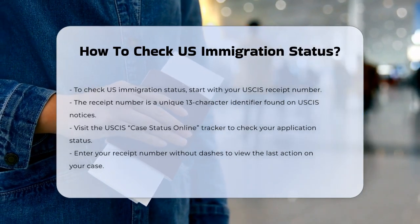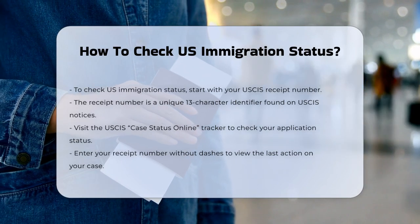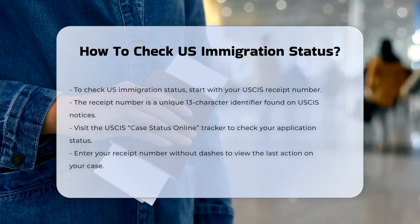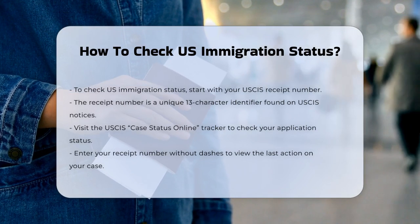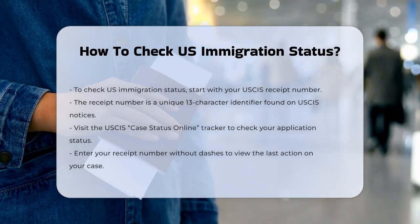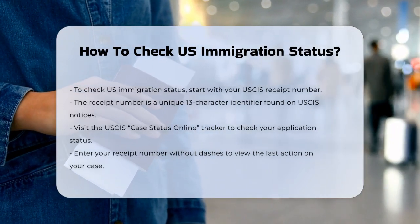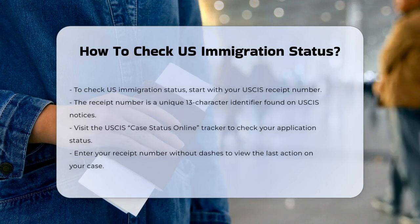First, you'll need your USCIS receipt number. This is a unique 13-character identifier that USCIS provides for each application or petition. You can find it on the Notices of Action that USCIS has sent you.